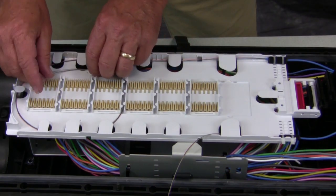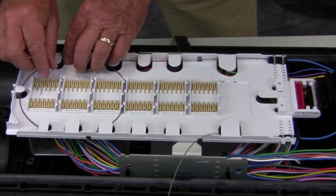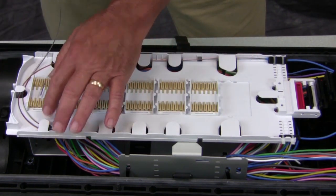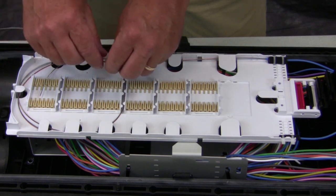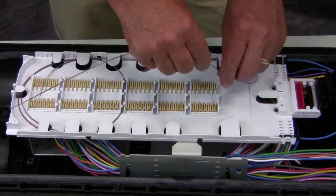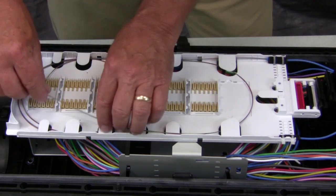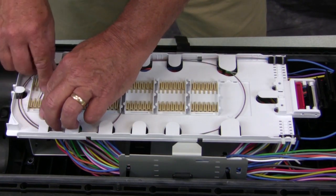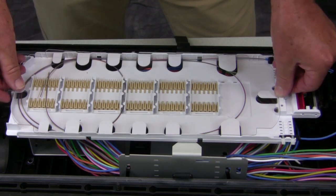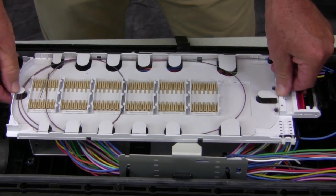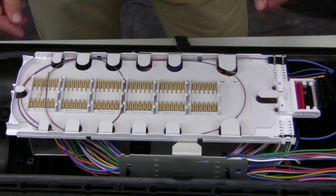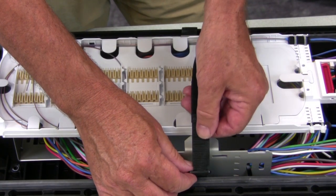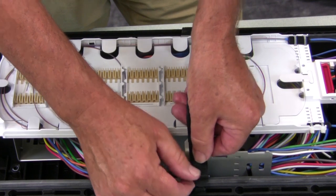Arrange the fiber around the tray for slack storage and splicing. Replace the tray cover. Repeat these steps for each tray until all the fiber has been stored in a tray. Finally, secure the tray to the basket using the Velcro strap.